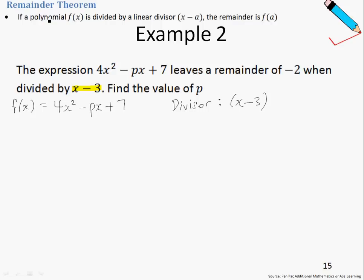Therefore, using our understanding from the remainder theorem, we can say that f(3) is our remainder. So how did I arrive at f(3)? You just take your divisor, equate it to 0, shift -3 to the right-hand side and you get x=3.